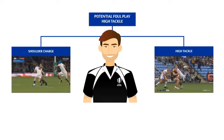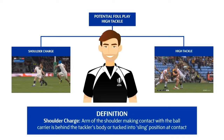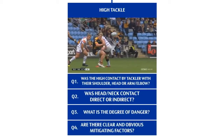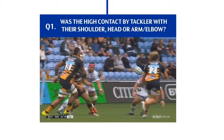Let's look at some more examples, this time of high tackles. The first step for match officials is to determine whether the high contact is a shoulder charge or a high tackle using the definition provided. If they have eliminated a shoulder charge, then they are dealing with a high tackle and must ask the following four questions to decide on the appropriate sanction. Let's look at some examples that would be sanctioned as high tackles. The first question should be: is the high contact from the tackler's shoulder, head, arm, or elbow?